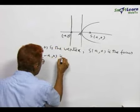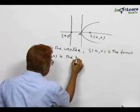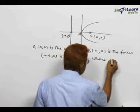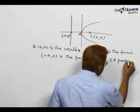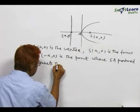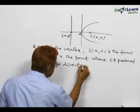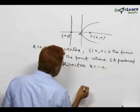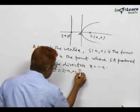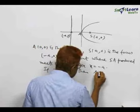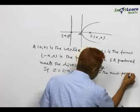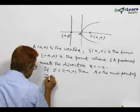(-A,0) is the point where SA produced meets the directrix x = -A. If Z is (-A,0), then A is the midpoint of ZS.